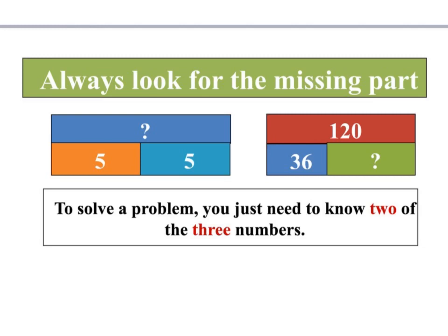To solve a problem you just need to know two of the three numbers. Looking at the first one, we've got two parts, so we have to add the two parts to find out our whole, and we can see from 5 add 5 that that will equal 10. Or in the next one we have 120 over here and 36 over here. For that one we'll need to do a take away calculation, so I need to write down 120 take away 36 and work it out that way.